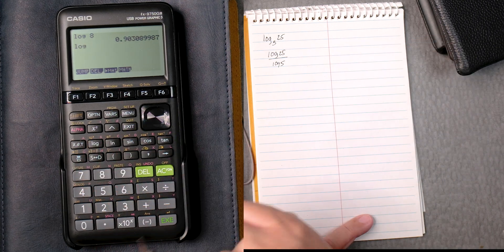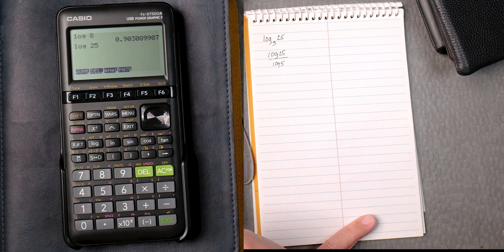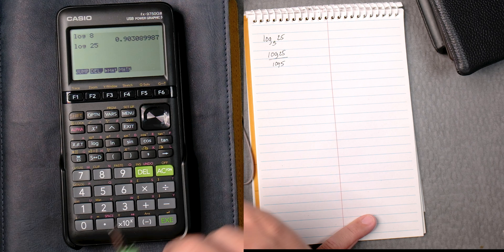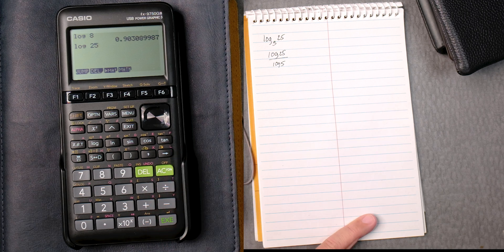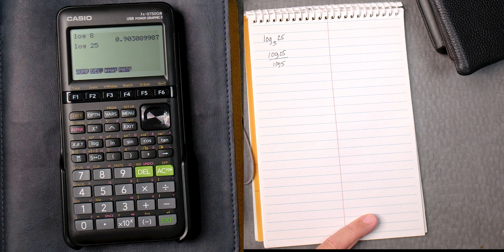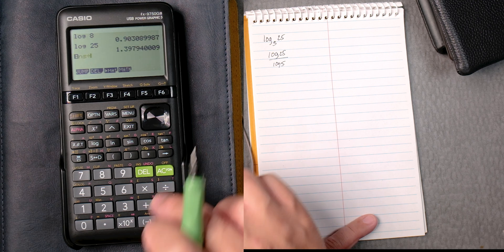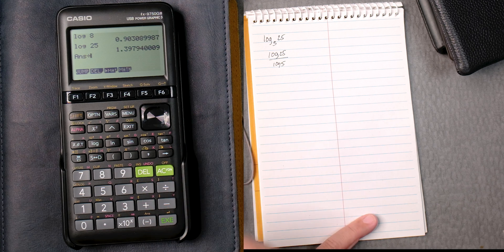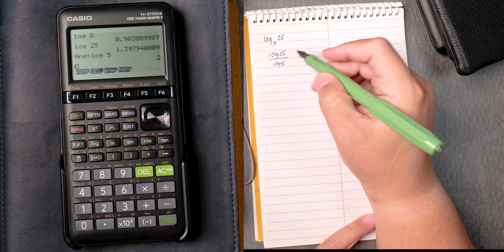We click on log, we type in 25, let's execute that. And then say divide, which is the answer, log 5, and then execute, gives you 2.